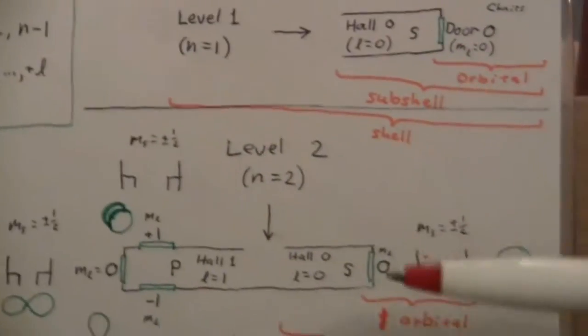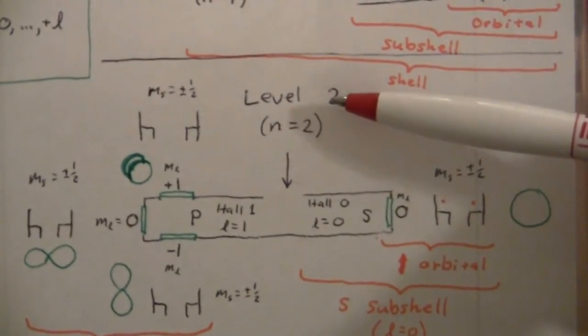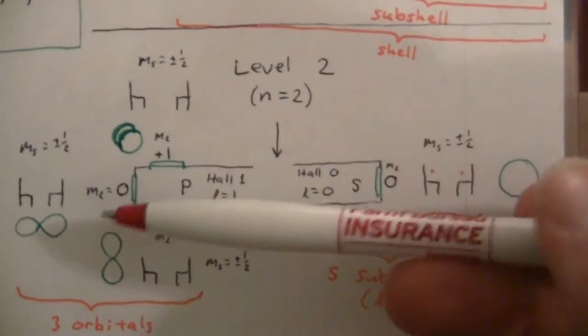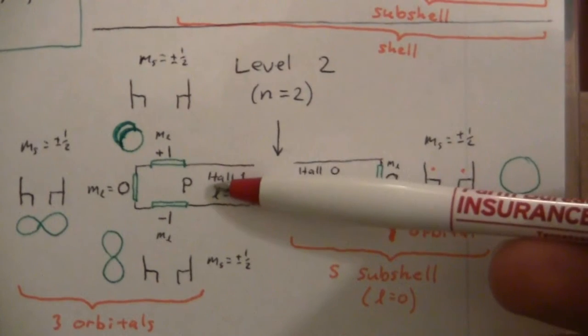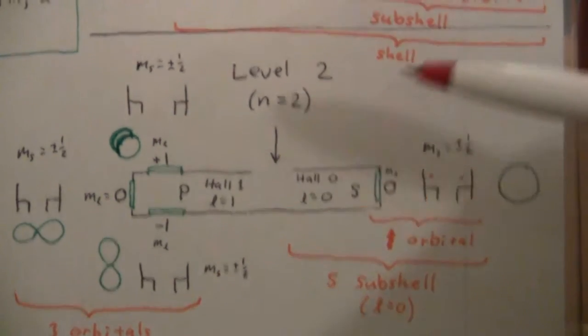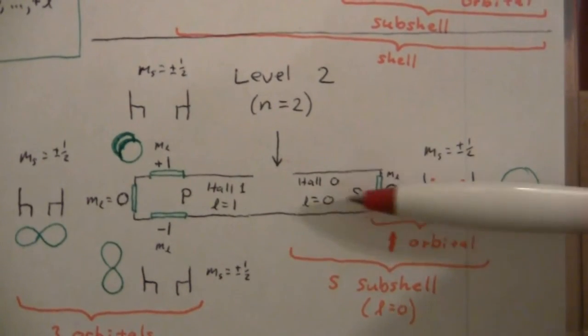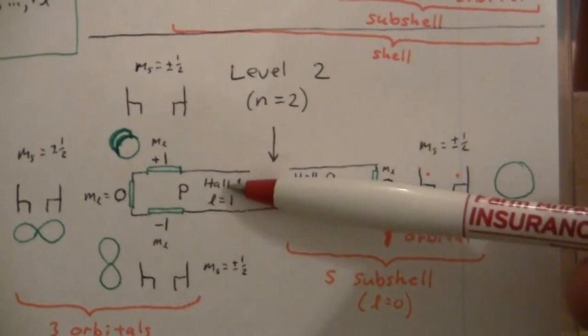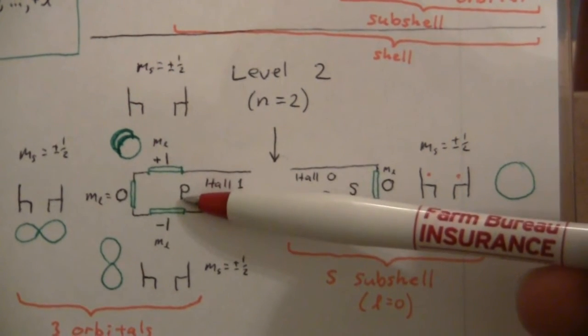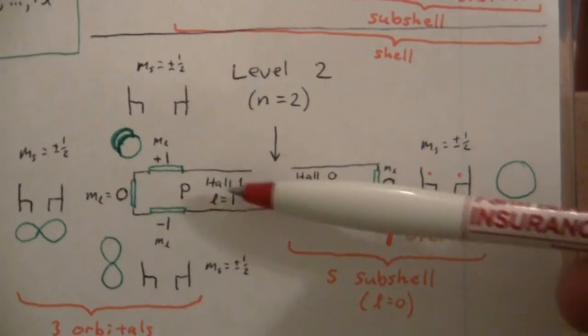So let's look on to level two. Level two has two hallways. There's hall zero and there's hall one. Hall zero, that's L equals zero. We give it the letter S, just like before. Whenever L is zero, that's S. Hall one, L equals one. We give it the letter P.